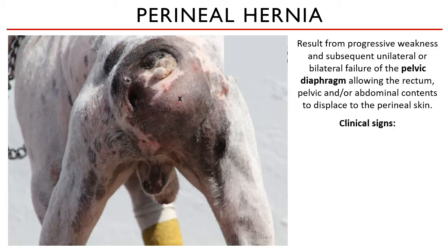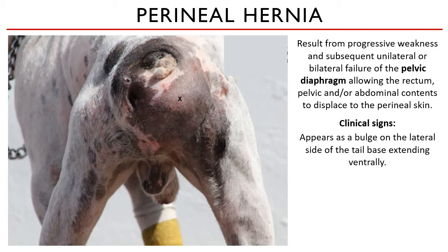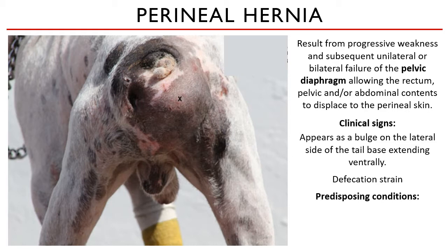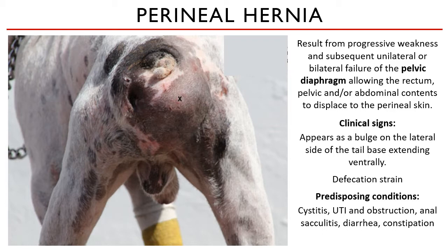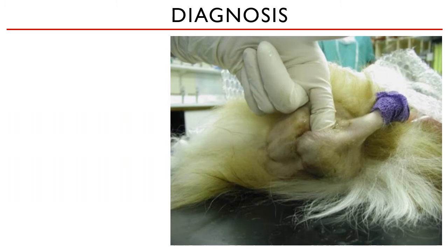This condition appears as a bulge on the lateral side of the tail base, which could extend ventrally. Males are more prone to this condition because their perineal diaphragm is weaker than that of females, and females' perineal diaphragms end more cranially than the male. Affected patients exhibit straining during defecation. Patients with cystitis, urinary tract infection and/or obstruction, anal sacculitis, diarrhea, and constipation are predisposed to perineal hernias.